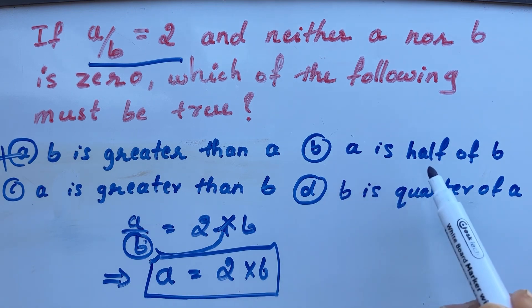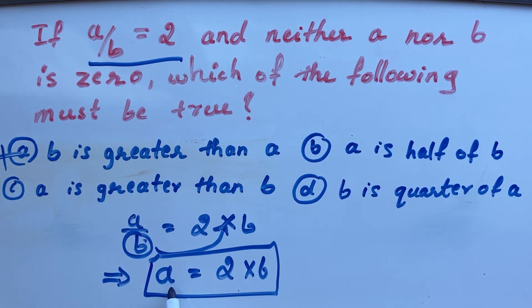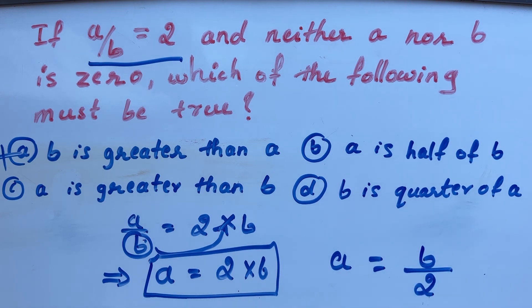Second is given A is half of B. Is A half of B? No. A is half of B means A should be equal to B by 2. But here A is 2 times B, not half of B. So second option is wrong.